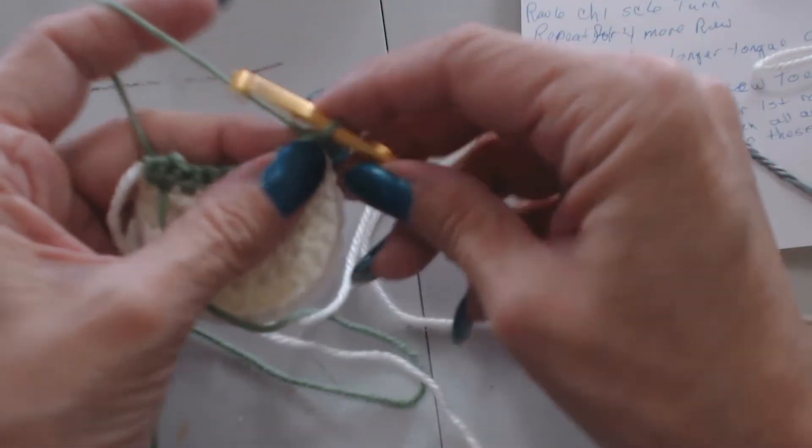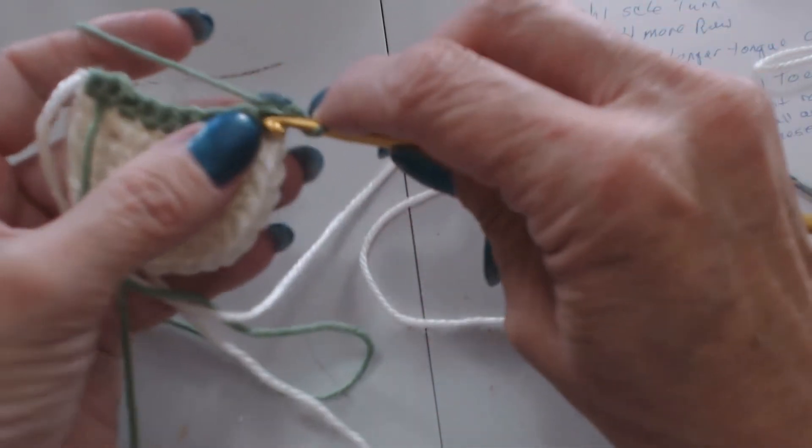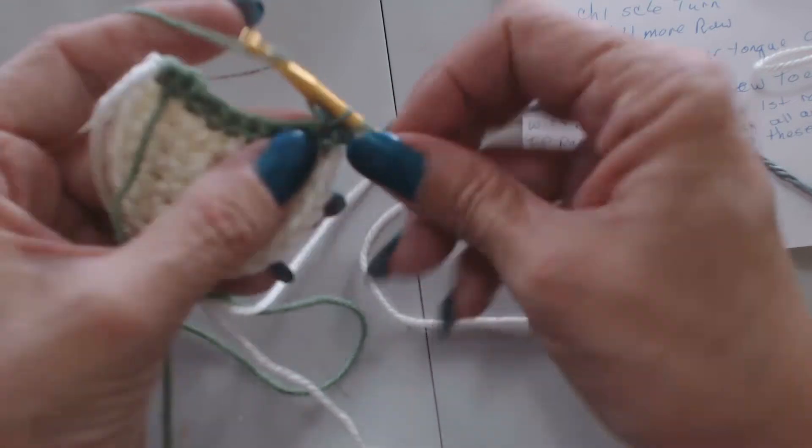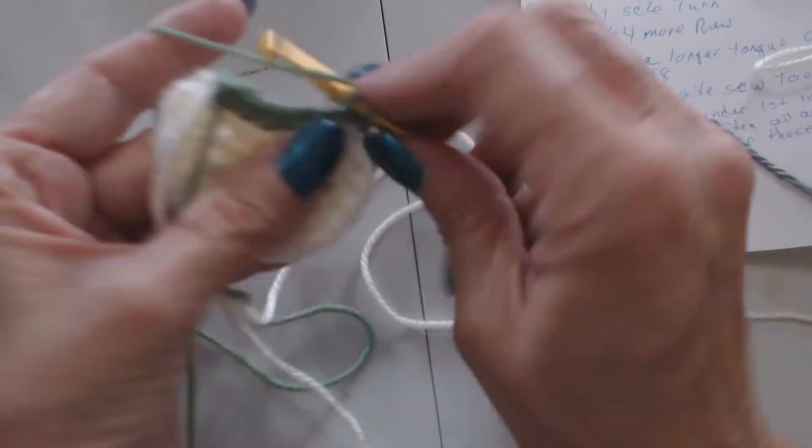So you're going to turn, chain one, and you're going to single crochet back across.